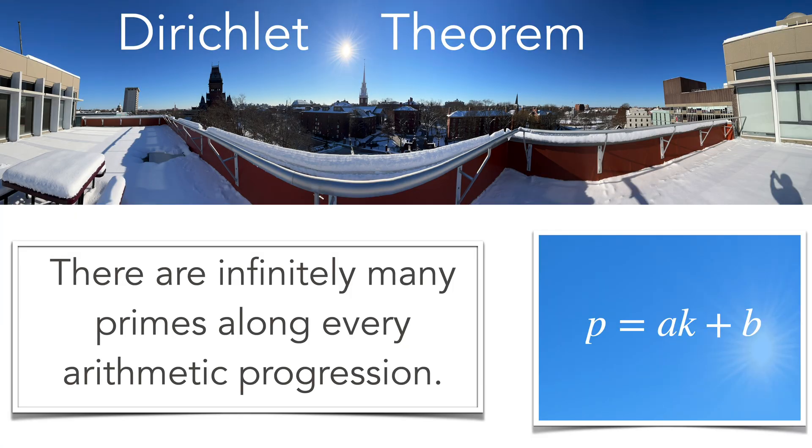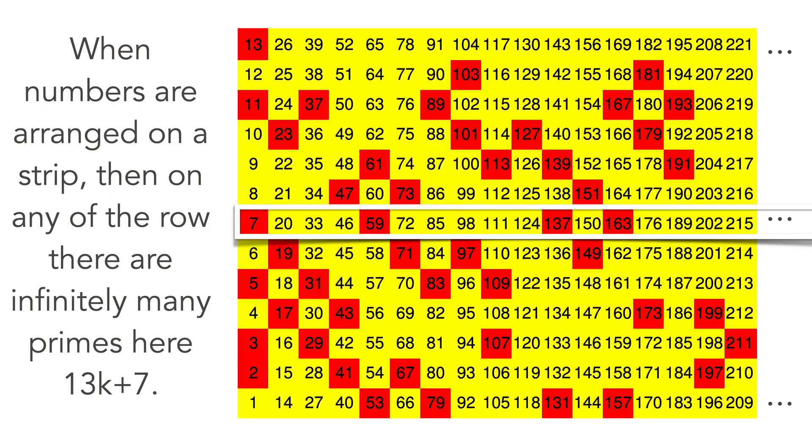Dirichlet's theorem is one of the deeper theorems. It tells that along any arithmetic progression there are infinitely many primes. It generalizes the already in antiquity known fact that there are infinitely many primes. But it's more general. So if you arrange the numbers in a rectangular array like here, then you take a row, and on that row there are infinitely many primes. So this row here, they are all numbers of the form 13k plus 7.